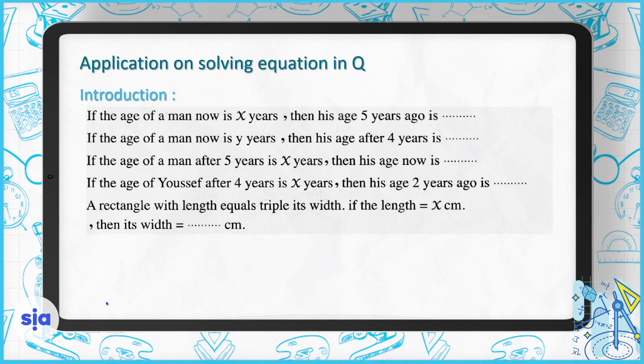In the first one, if the age of a man now is X years, then what is his age five years ago? We're going to go back five, so it's X minus five. If the age of a man now is Y years, then what is his age after four years? We're going to add four, so it will be Y plus four.